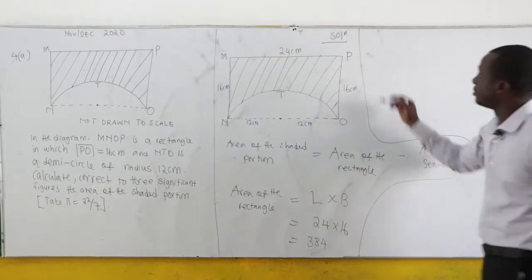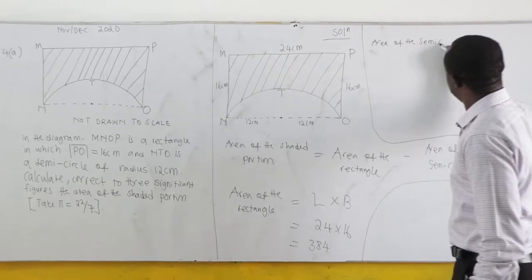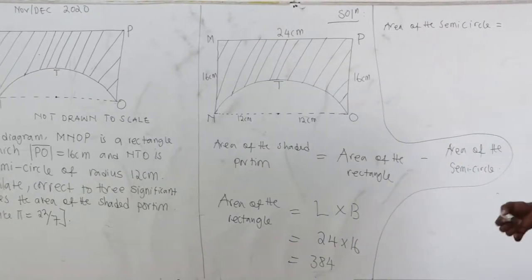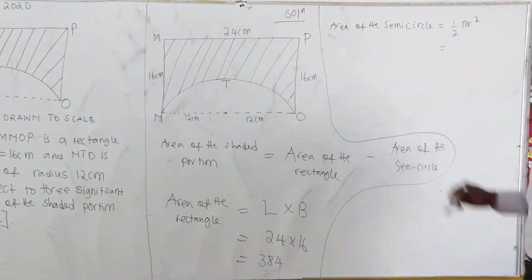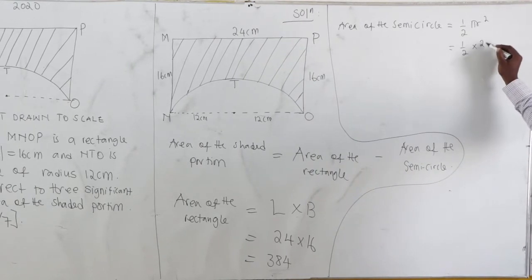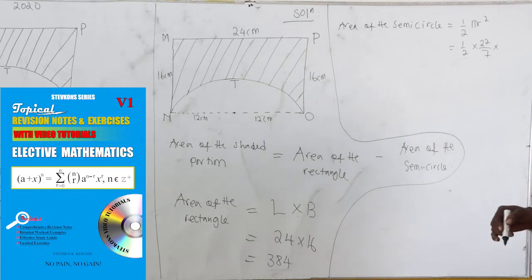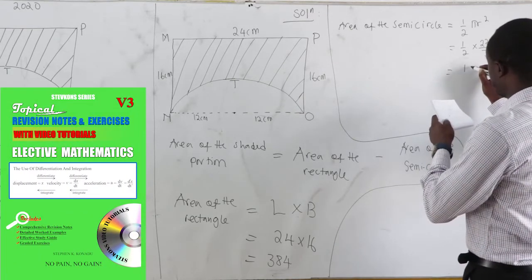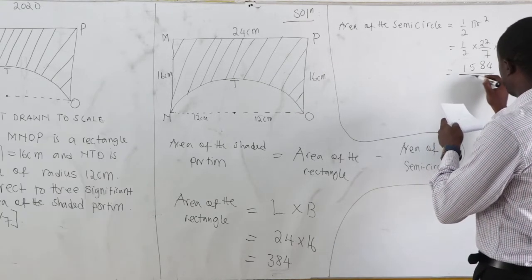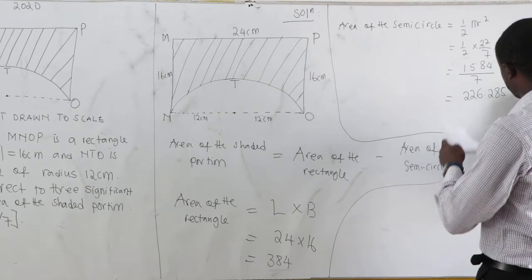Then let's find area of the semicircle. Now, for a full circle, area becomes Pi r squared. But this is semi, half of it. So we have half Pi r squared. Now, we have half, Pi is 22 over 7 as given in the question. What is our r? Our r is 12. So we have 12 squared. Now, punching this on the calculator, this is giving us 15,84 all over 7, and this is 226.28571.